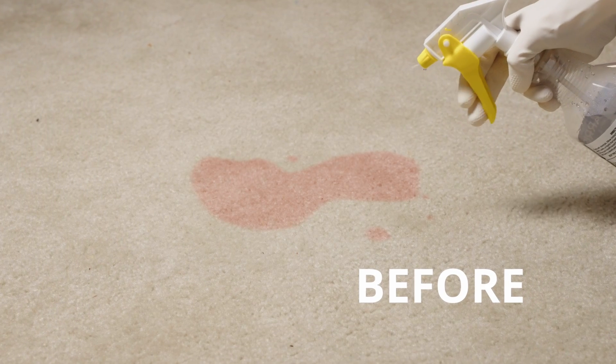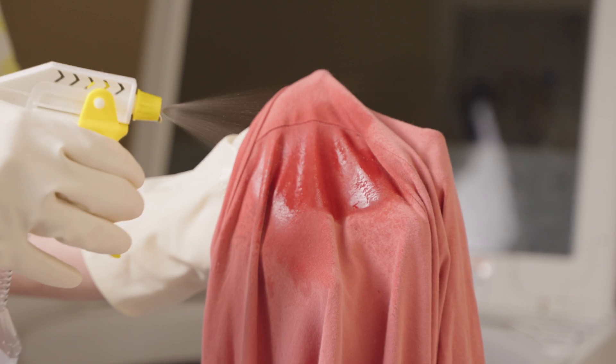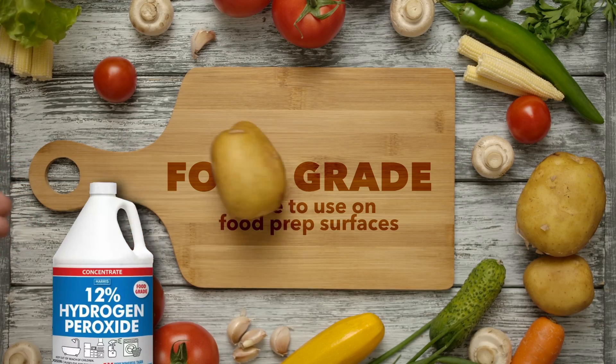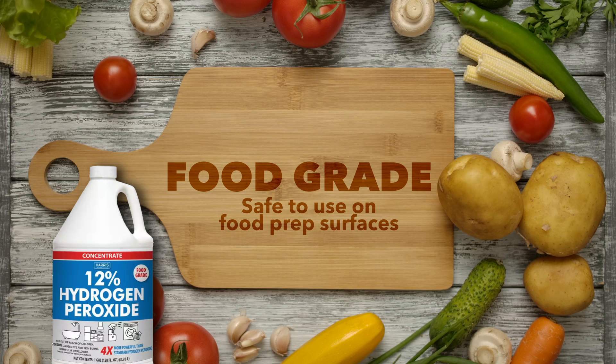Harris Hydrogen Peroxide All-Purpose Cleaner is ideal for cleaning carpets, tackling stubborn stains in your laundry, and revitalizing surfaces like bathroom tile and grout and stainless steel in your kitchen or restaurant. And it's food grade, so it's safe to use on food prep surfaces such as countertops and cutting boards.